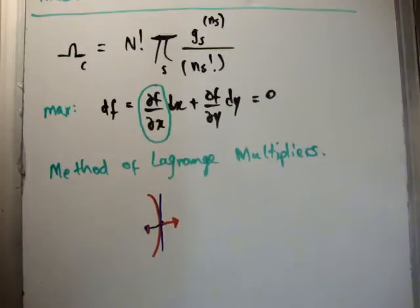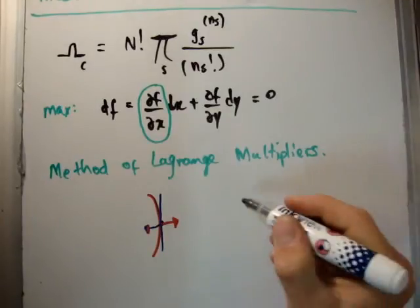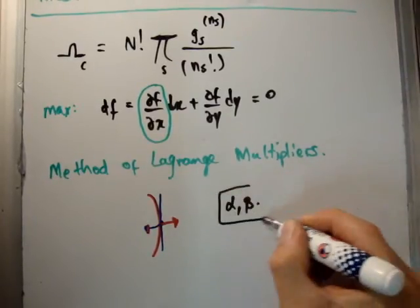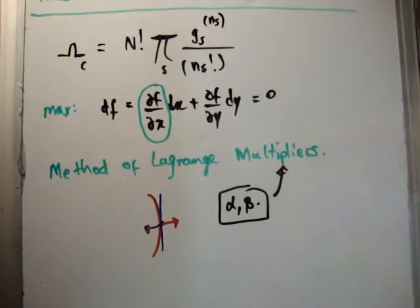Now, I'll also note that I'm going to be calculating things in terms of two Lagrange multipliers, alpha and beta. Of course, these will be our Lagrange multipliers, and in another video, I will calculate what alpha and beta are.